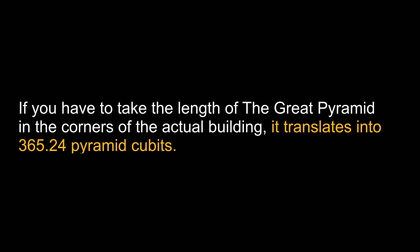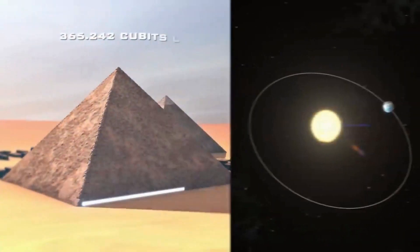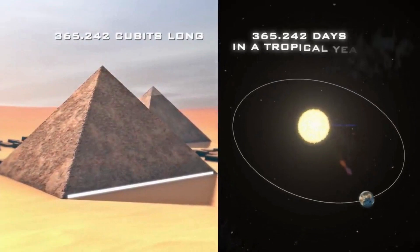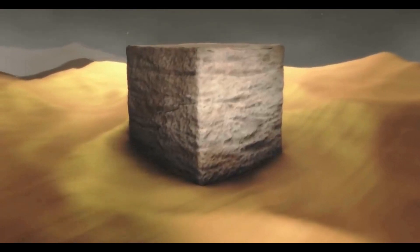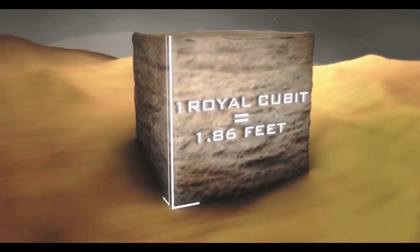If you have to take the length of the Great Pyramid in the corners of the actual building, it translates into 365.24 pyramid cubits, which just happens to be the Earth's year right down to the quarter day. Additionally, they don't use the inch as we normally have it in the English system. It's the cubits.